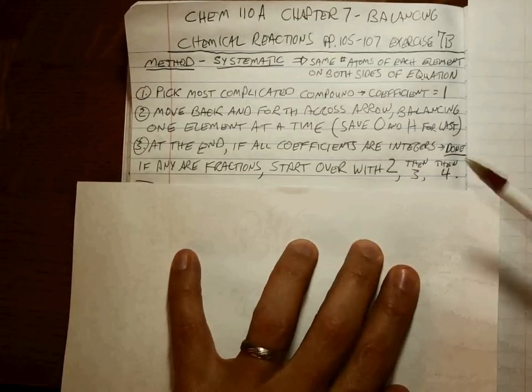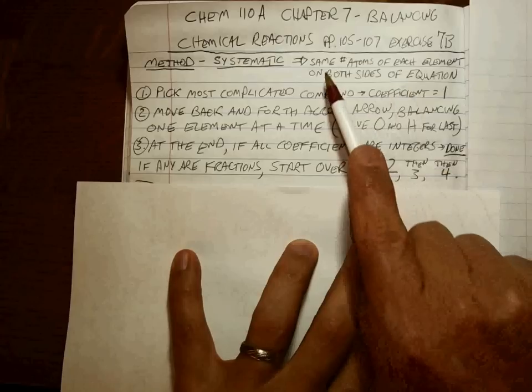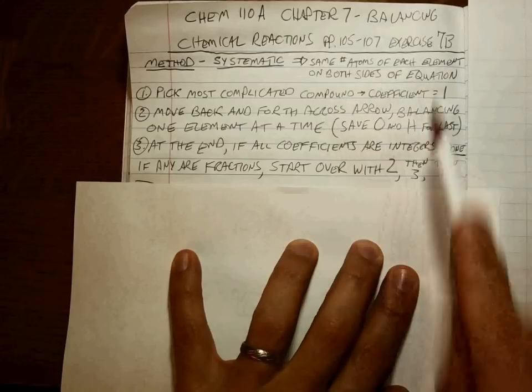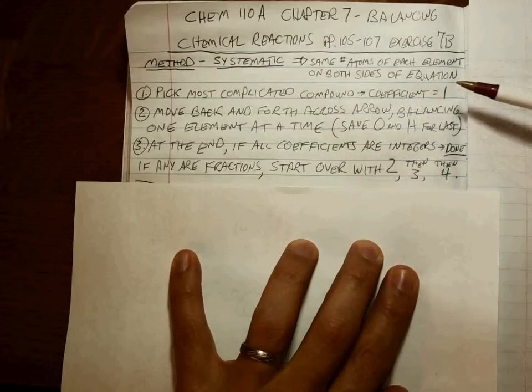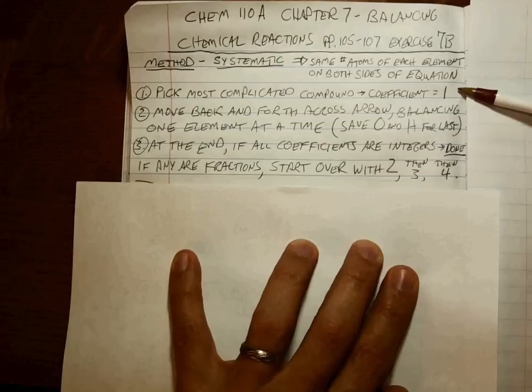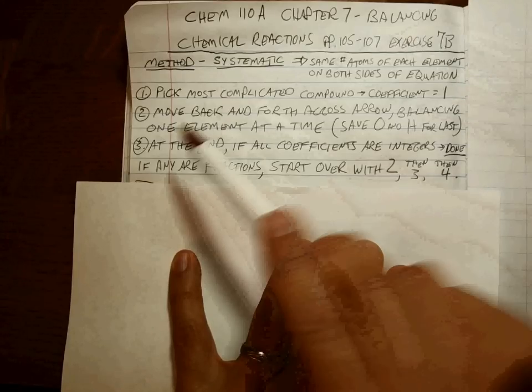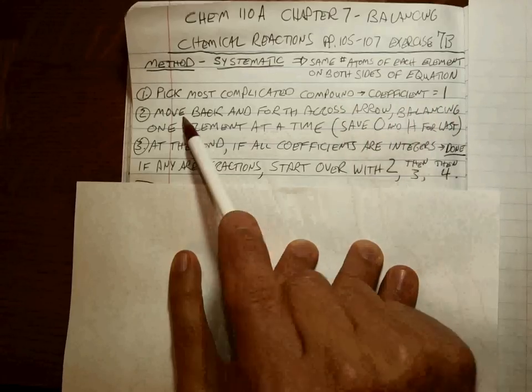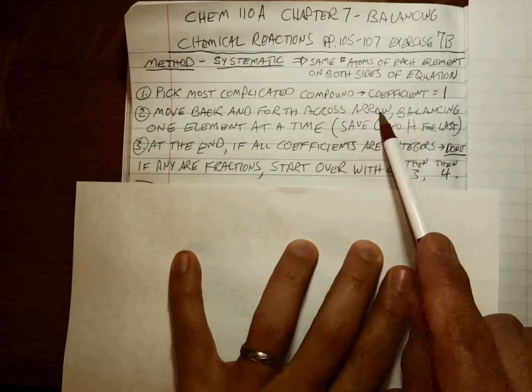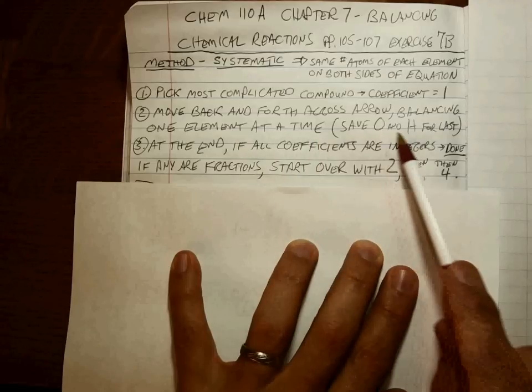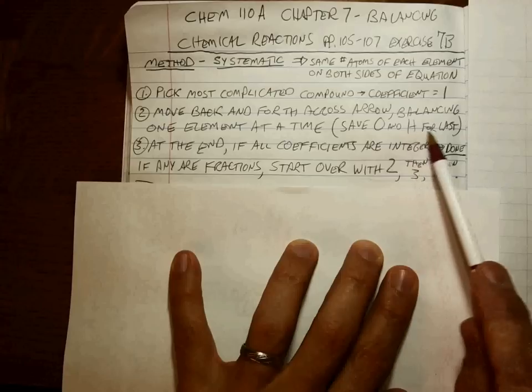Systematic approach. The key is that in order to have a balanced equation, by balance we mean the same number of atoms of each element will be found on both sides of the equation. Pick the most complicated compound and give it a coefficient equal to 1. Then move back and forth across the arrow from reactants to products, balancing one element at a time. Save oxygen and hydrogen for last.